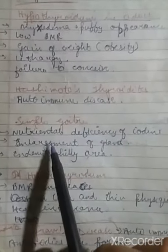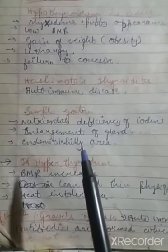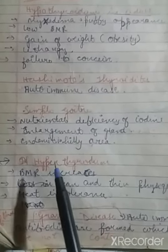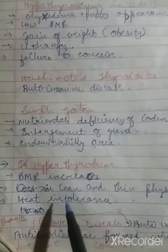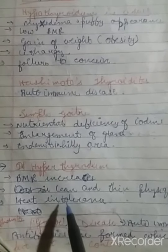Simple goiter is a nutritional deficiency of iodine in which there is an enlargement of the thyroid gland, mainly seen in hilly areas. If there is hypersecretion of thyroid hormone, it is known as hyperthyroidism, corrected by using antithyroid drugs. Hyperthyroidism increases BMR, causing the person to become lean and thin, with heat intolerance due to increased calorigenic processes.